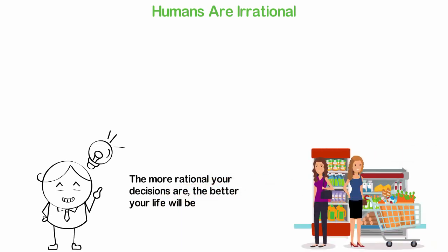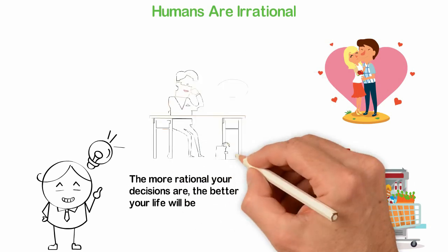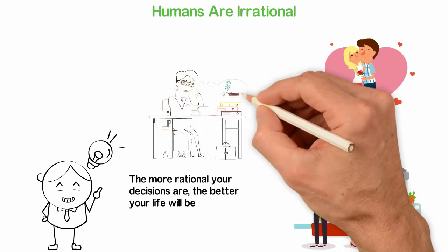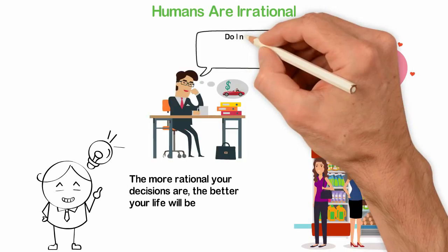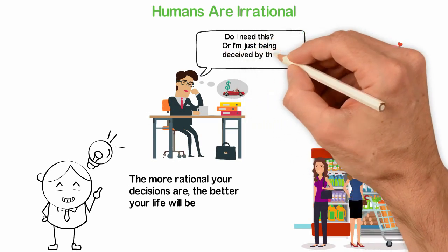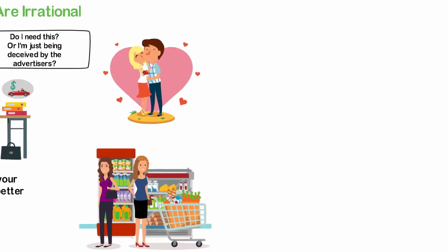Think about things we purchase. Think about the partners we married. Think about the most important decisions of our lives and you'll see how irrational we are. If you know you're irrational, then you'll pause and think before you buy those new phones, clothes, or shoes. Do you really need them or you're just being deceived by the advertisers?